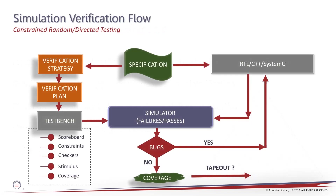So the simulation-based verification flow, at a very high level: we have a strategy, we have a plan, it goes into a test bench, which typically consists of a scoreboard, constraints, some checkers, lots of apparatus needed for stimulus generation, and then running your code coverage and functional coverage to sign off. Typically you go from specification on the left-hand side into this path, and from specification you'll be writing your designs in some kind of Verilog, VHDL, or even SystemC. You feed both of them into a simulator, which tells you if your given tests are passing or failing. If they're failing, there could be bugs — you go and fix them.